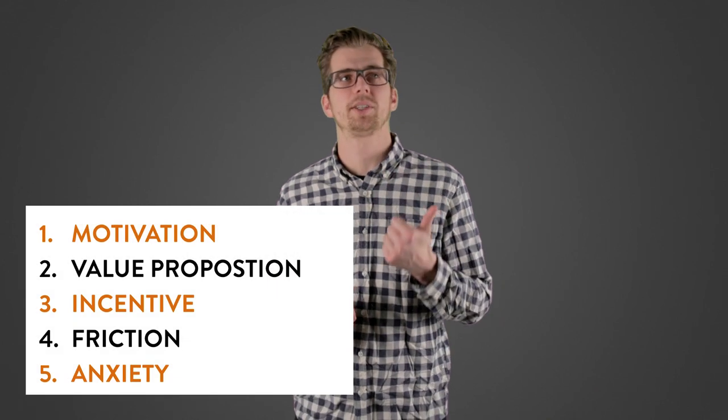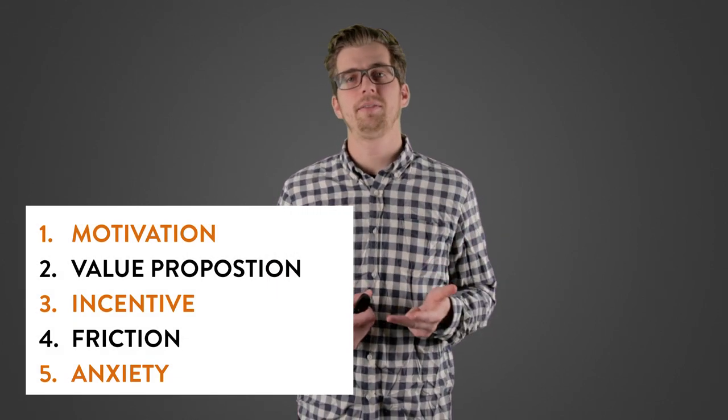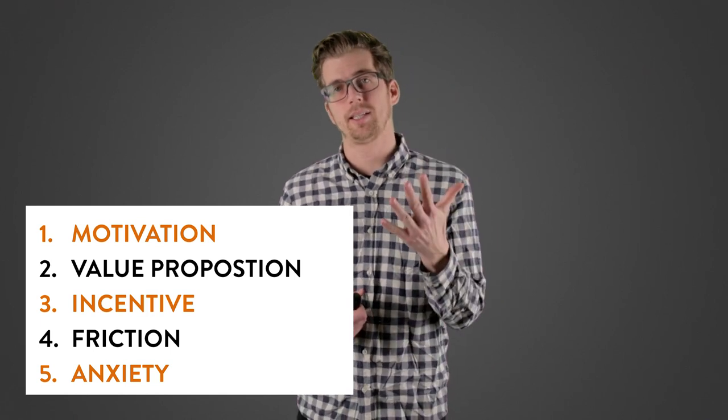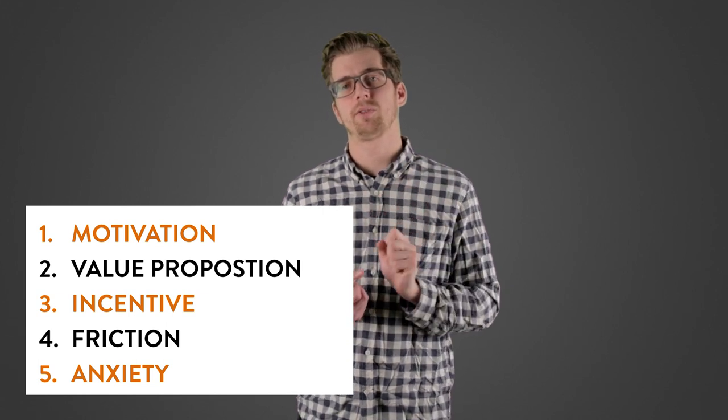So the conversion formula consists of five different properties. It's about motivation, value proposition, incentive, friction, and anxiety. Those are the five components that go into the conversion formula.